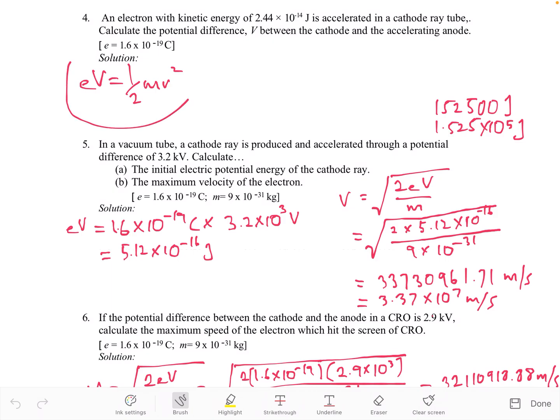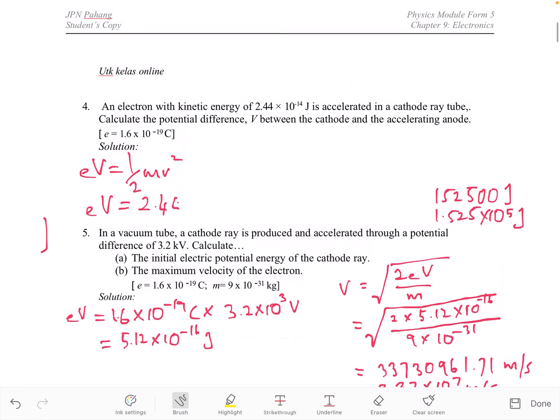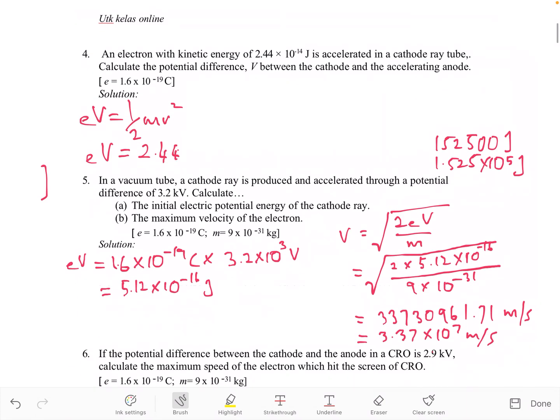Here is the formula. You are already being given the energy. 2.44 times 10 to the power of negative 14 J is actually this part. So you can simply write eV equals 2.44 times 10 to the power of negative 14.